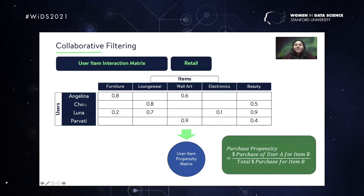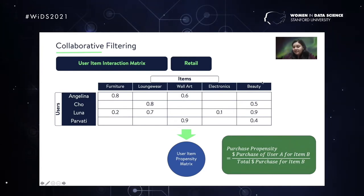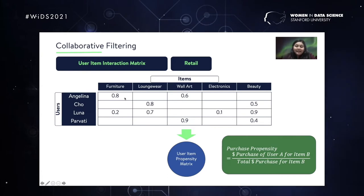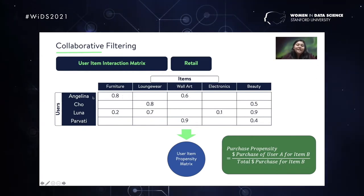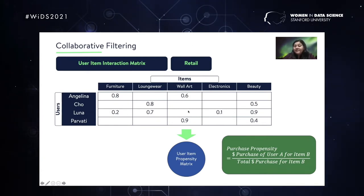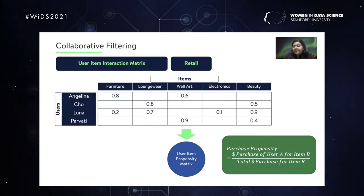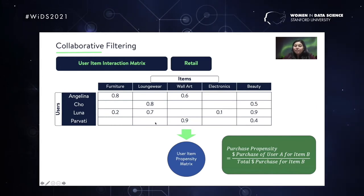Another example from retail is the user-item propensity matrix. Here, instead of movies, we have items in the columns and users in the rows. Each cell indicates the propensity or likelihood of a particular user purchasing a particular item. For example, 0.8 means Angelina has a propensity of purchasing furniture with about 80% probability. Many cells are missing because not all customers purchase all items — at any given time, a customer would only have purchased a handful of items in the Walmart ecosystem. One problem we try to solve is to come up with predictions for these missing cells.